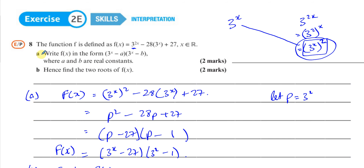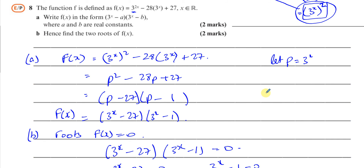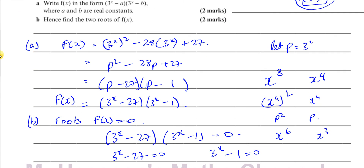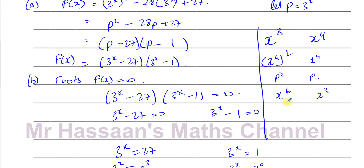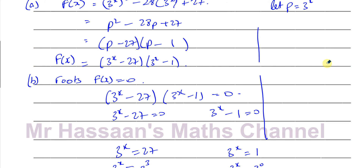Anytime you have a question involving disguised quadratics — for example, you might have one term which is x to the power of 8 and the other is x to the power of 4 — this is like (x⁴)² and x⁴. You can call x⁴ the letter p, so this would be p squared and that would be p. Or for example, x to the power of 6 and x to the power of 3: anytime the power is double, you can say one is p squared and the other is p. If you call p = x³, this would be p and this would be p squared. Anytime you see that, you can apply this.